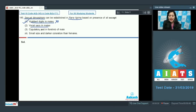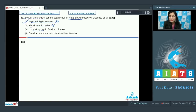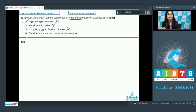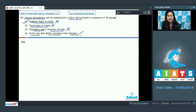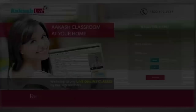Vocal sacs are present only in males, so based on them we can differentiate between male and female Rana tigrina — so this cannot be the answer. Copulatory pad in the forelimb is present only in males and lacking in females, so it can establish sexual dimorphism. Small size and darker coloration than females also helps establish sexual dimorphism. Therefore, the correct answer to question 145 is option number one.